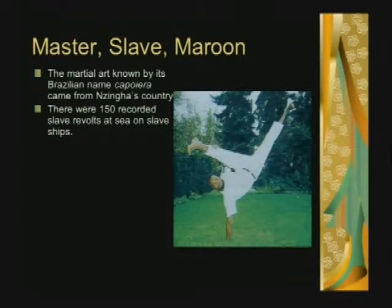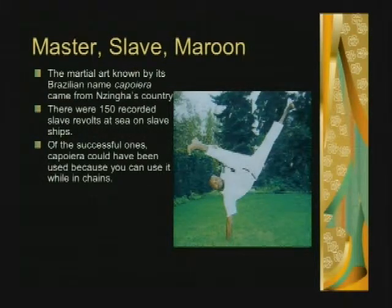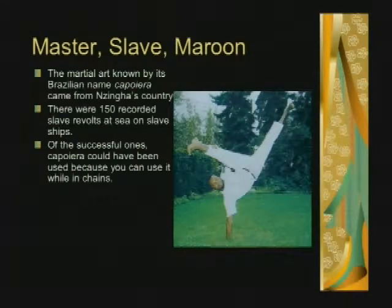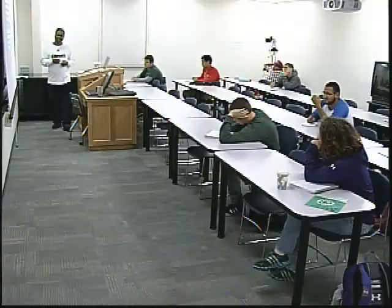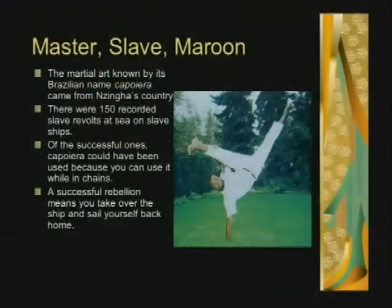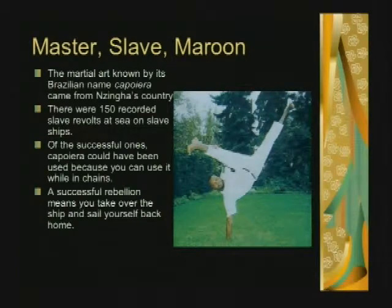The martial art known by its Brazilian name Capoeira came from Nzinga's country. There were a hundred recorded slave revolts at sea on slave ships, and successful ones may have used Capoeira because it can be used while in chains. When people first saw Capoeira demonstrations, they said it looked like breakdancing — but breakdancing actually takes its moves from Capoeira. In a successful rebellion, you take over the ship and sail yourself back home. Capoeira, particularly from Nzinga's country, could basically allow you to take over a slave ship while in chains.